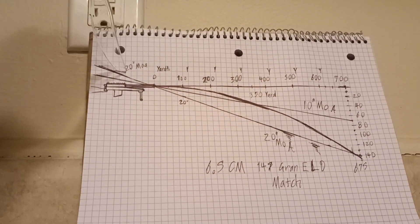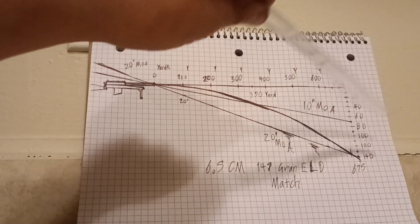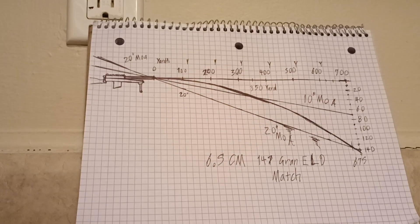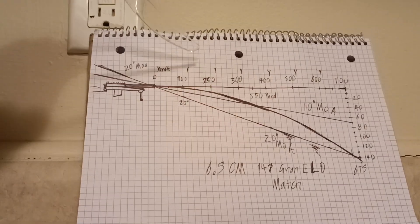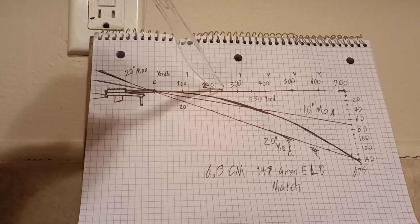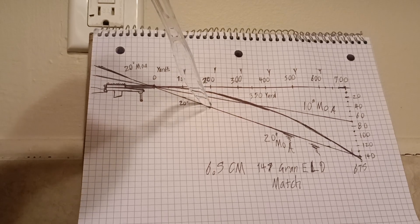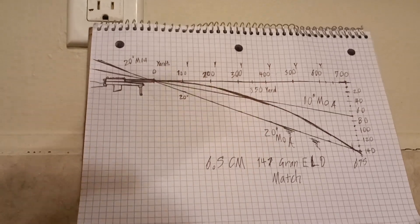That's the difference between a zero MOA rail as we have on the top line, roughly a 10 MOA rail as we have on the second line, and a 20 MOA rail as we have on the third line.